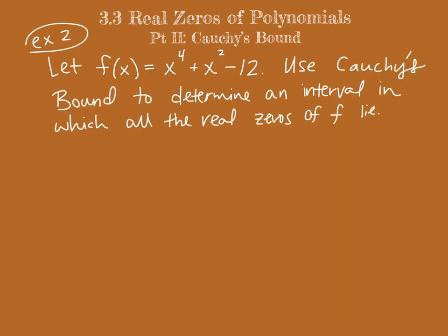Here's our second and final example. We want to use Cauchy's bound to determine an interval in which all of our real zeros of f lie. f in this case, again, is quartic, but now it's a quartic trinomial, so it has fewer terms. So again, Cauchy's bounds, we want to pick the largest of these numbers.